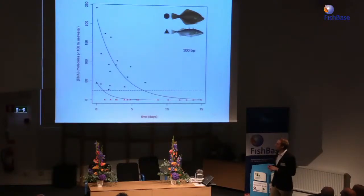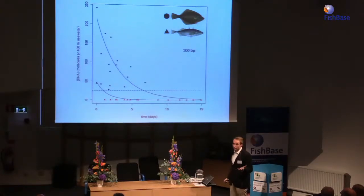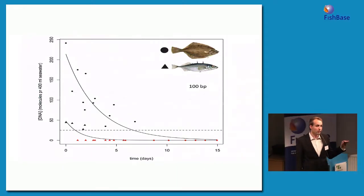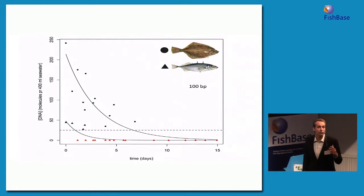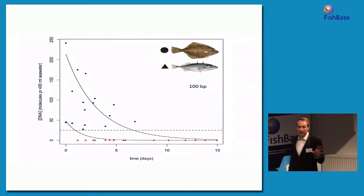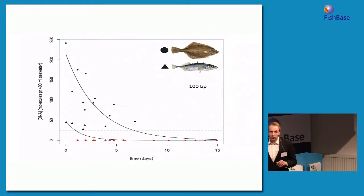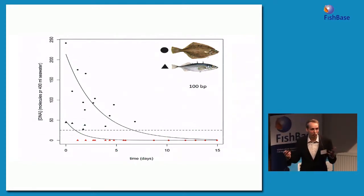Back to the published paper: similar to the freshwater study, we wanted to see about the degradation of DNA through time. That is even more important in the marine environment, where you have a connected system all around the globe — we could theoretically detect clownfish DNA from Australia coming into Denmark because it's connected. So it's really important to see how fast DNA actually degrades, because it tells us how far it can potentially travel.